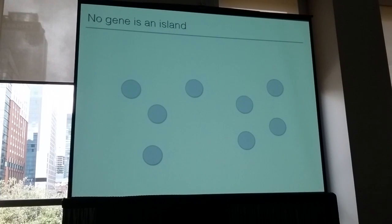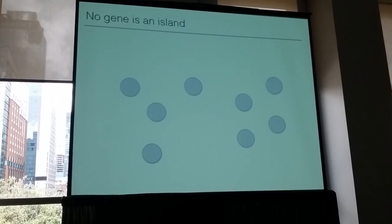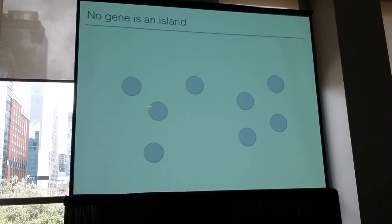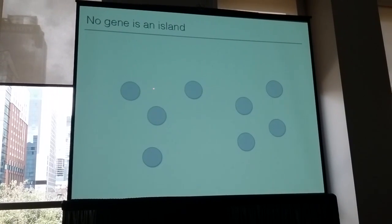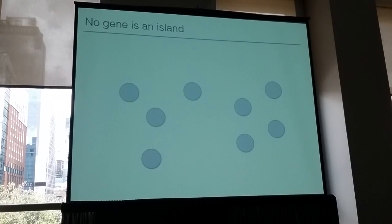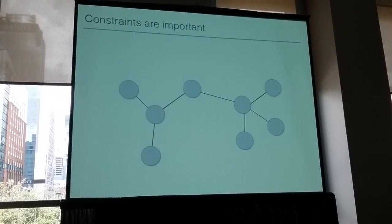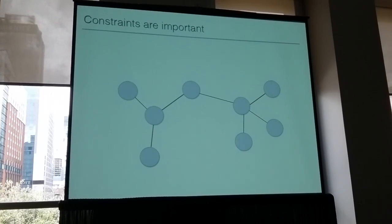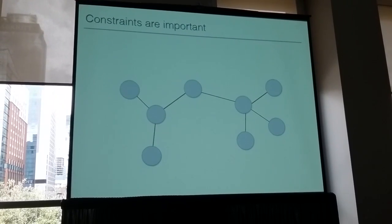Where the project starts is this observation that in biological systems it's never the case that individual genes, or individual populations, or individuals interact in isolation from other people, other genes, other populations. We know there is some pattern of connectivity that unites individuals in a social network, or unites genes in a gene interaction network, or unites populations in a metapopulation structure.